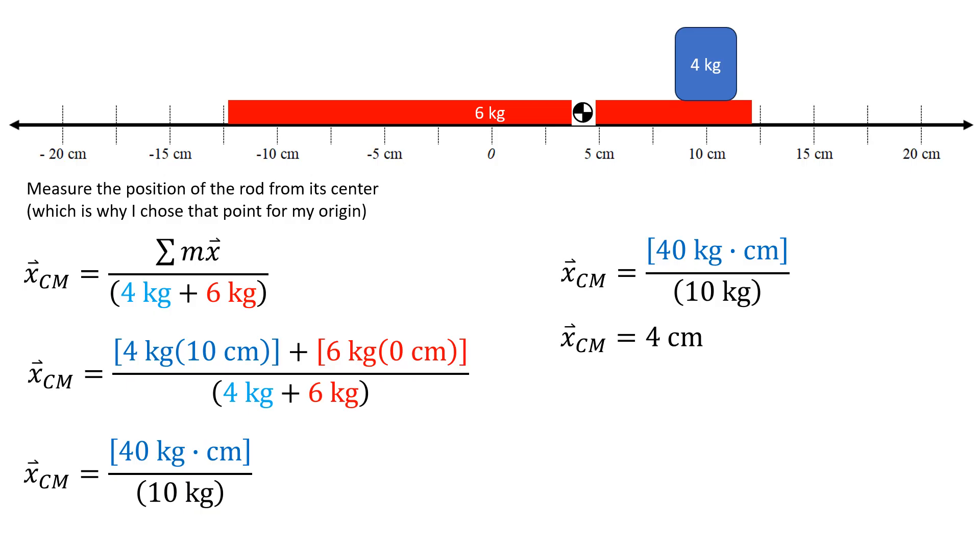The heavier that rod gets, the closer the center mass is going to move towards the center. In lab, we'll do things to feel that. We'll put things on meter sticks, move them around, change the mass of those things to get a feel for how the center mass moves as we move the pieces around.